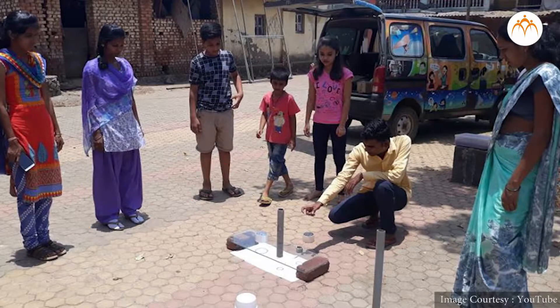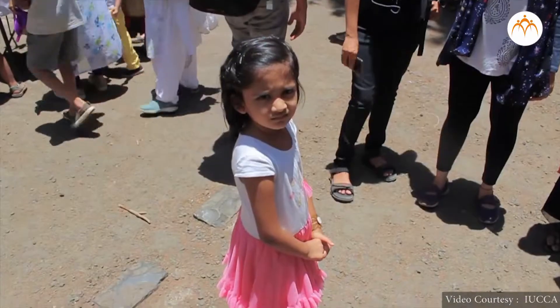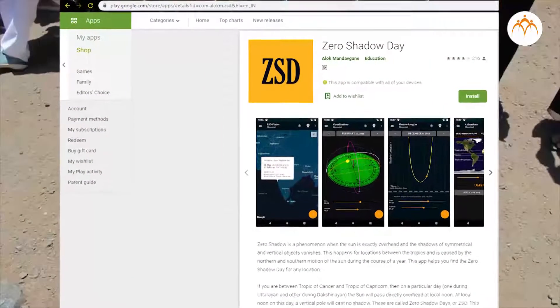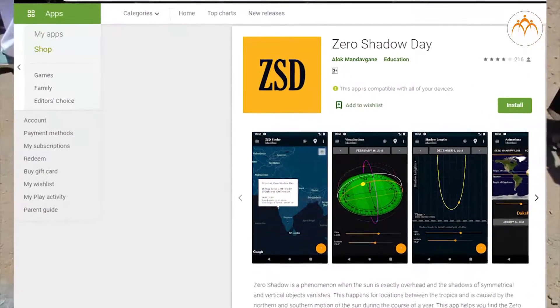Here are some pictures taken at IUCAA Pune on zero shadow day. You can also download the zero shadow day app on Android phone and check the day of the year on which there will be no shadow at noon.